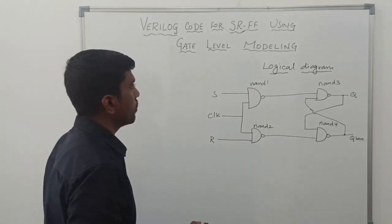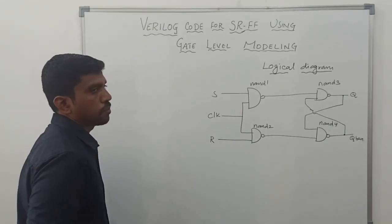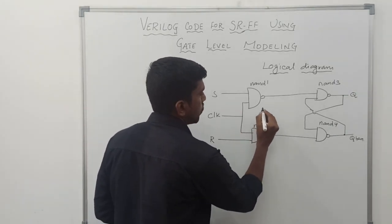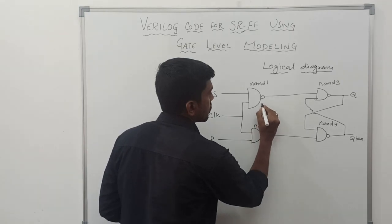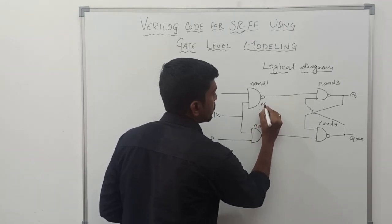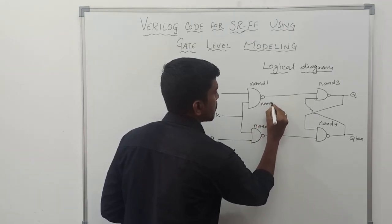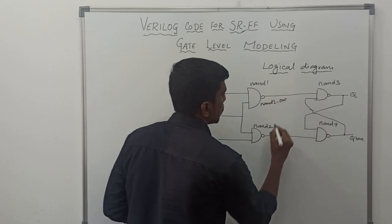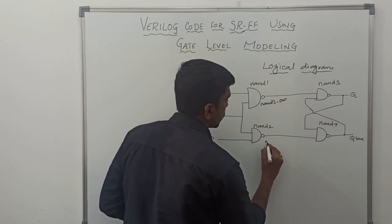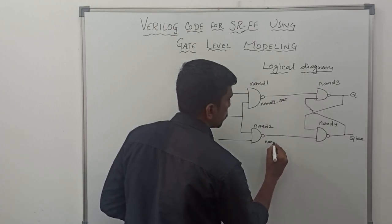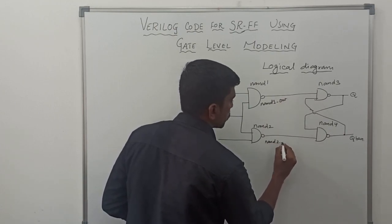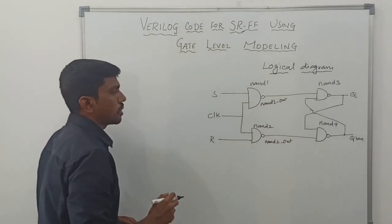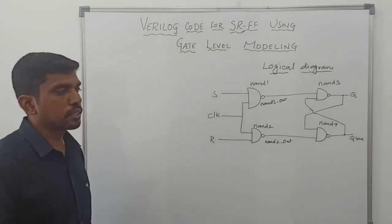Now we go to write the program. Before writing the program, you assign the wire signals. In this logical diagram, we use two wire signals: NAND1-out and NAND2-out. These two signals are called wire signals.